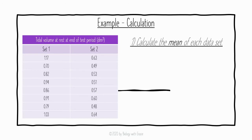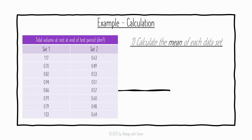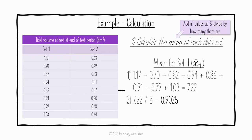To carry out the Student's t-test we first need to calculate the mean of each data set. The mean involves adding all the values up and dividing by how many there are. For set one, we add 1.17 + 0.70 + 0.82 + 0.94 + 0.86 + 0.91 + 0.79 + 1.03, which gives 7.22. We have eight values, so 7.22 divided by 8 gives us a mean for set one of 0.9025.